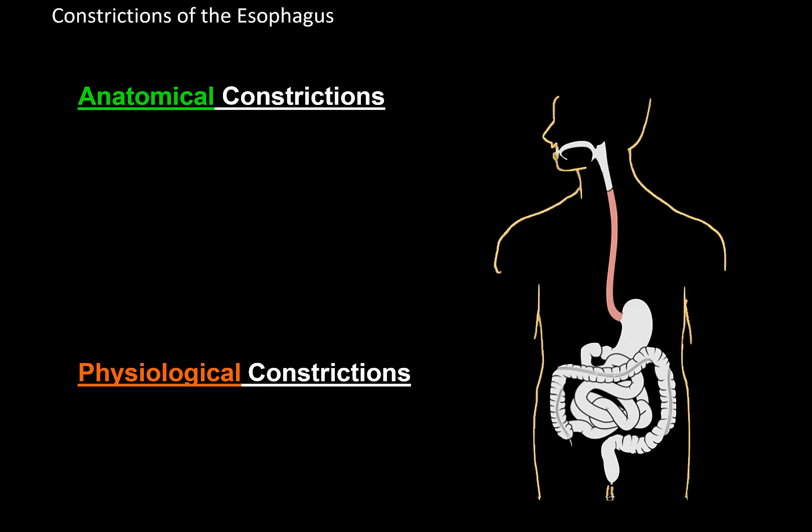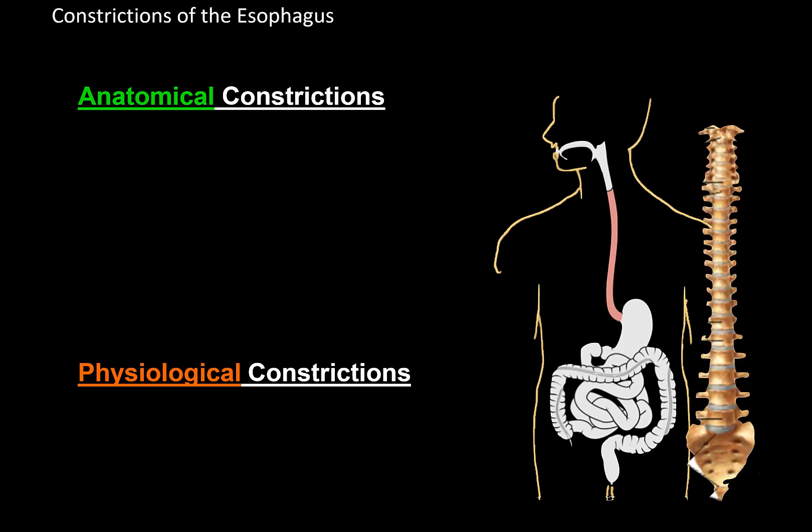Another thing we need to know about the esophagus is that it has some constrictions. Depending on their nature, we can divide them into anatomical constrictors, which are there by anatomical development and remain even after death, and physiological constrictors, which function only in a living body.